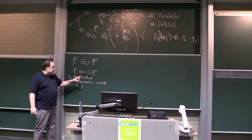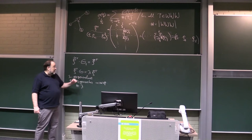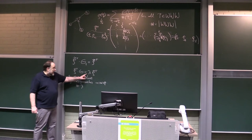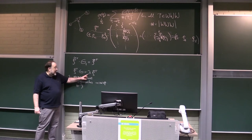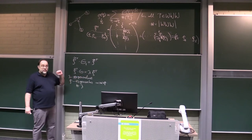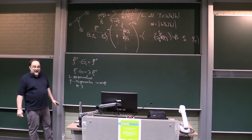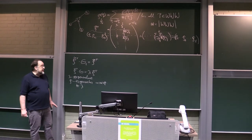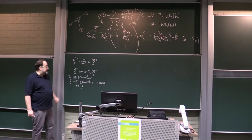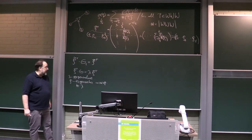In general, for one eigenvalue you can have several linearly independent eigenvectors.